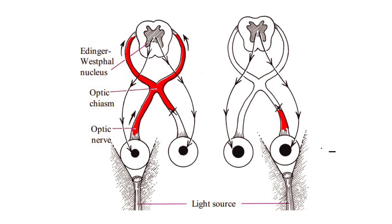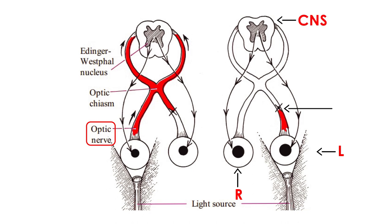This is the left eye and this is the right eye. We shined the light into the left eye first, and because there's damage in that left optic nerve — represented by that arrow — the response never gets to the CNS. That's why you don't see constriction of the pupil.